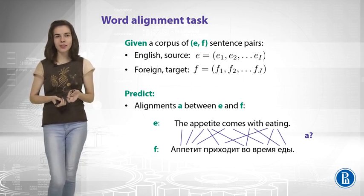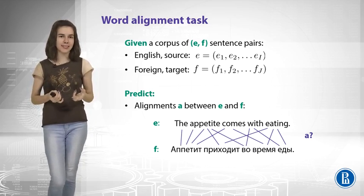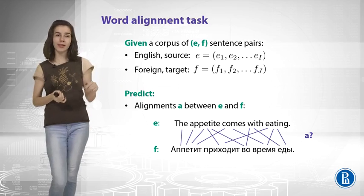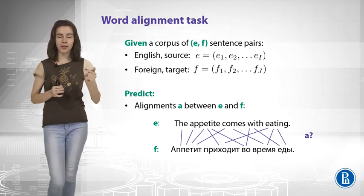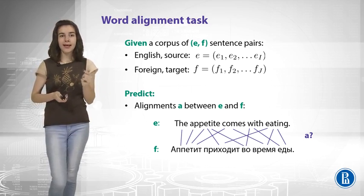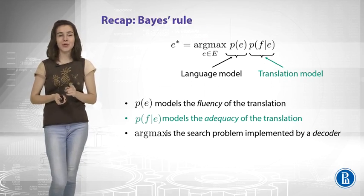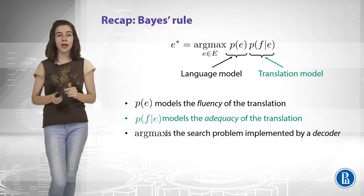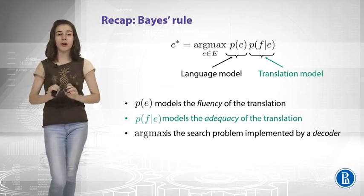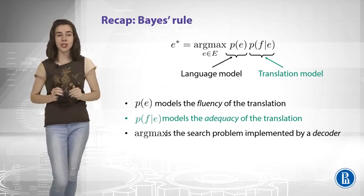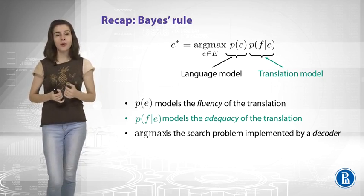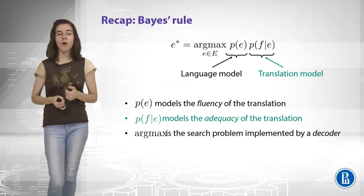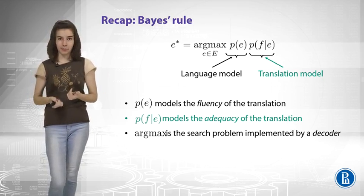Why do I say so? Usually we talked about machine translation system from French to English or from foreign to English. Why do I say now that it is vice versa? This is because we applied Bayes' rule. So if you remember we did this to have our decoupled model about language and about translation and now to build the system that translates from F to E we need to model the probability of F given E.